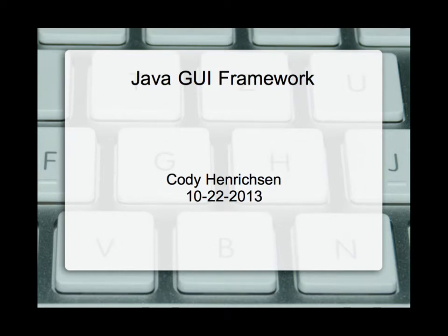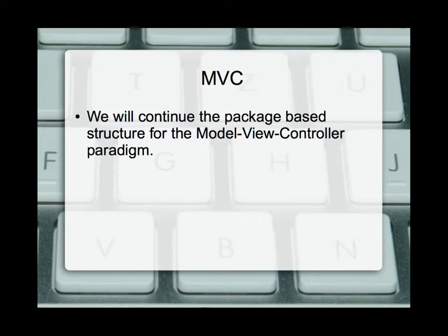Today we're looking at the Java GUI framework that we'll be using for class, as well as a baseline framework or boilerplate for the entire year. We're going to continue with our model-view-controller structure. This is one of the main paradigms used in programming today. It allows for a great separation of code, keeping your logic, your visual pieces, as well as your modeling objects separate but linked together.